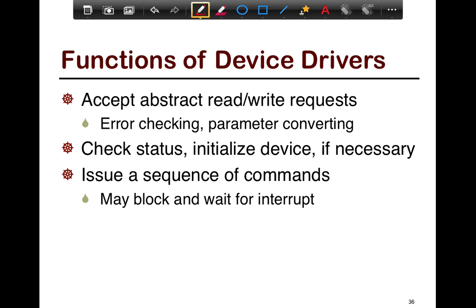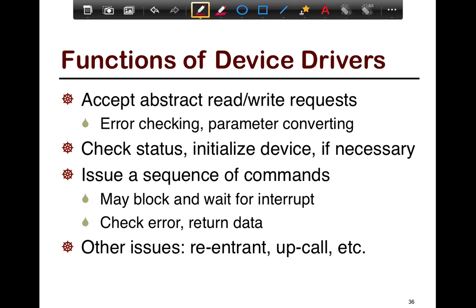The functions of device drivers are specific to the hardware, but typically they accept read and write requests — all read and write requests eventually go through the device driver. For example, there's a circular buffer in the network card to handle packets. They check the status and initialize the device if necessary, issue a sequence of commands related to blocking and waiting for the interrupt, and check for errors and return data — they are the first line of error checking.